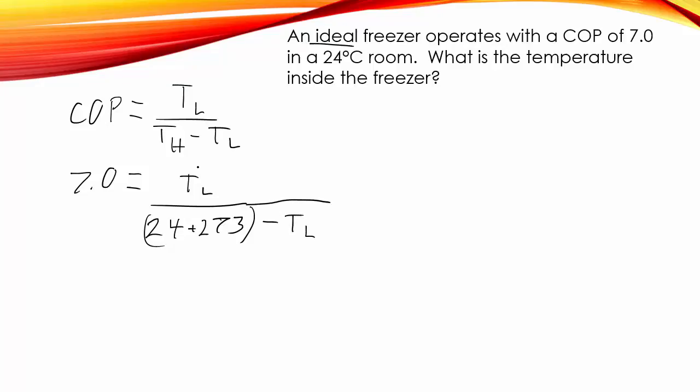Alright, this looks like fun. So, we can multiply this over here, and we're going to have 7 times 297, which is what we get when we add those. And then we're going to have minus 7 times TL. So, I just went ahead and distributed that 7 to both of these things. That equals TL.